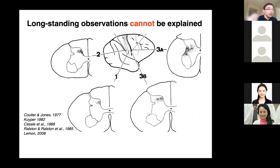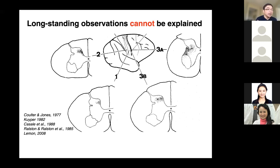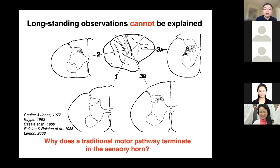For example, in a classic study by Coulter and Jones in the 1970s, they showed that injecting an anterograde tracer into the somatosensory cortex in monkeys revealed that their descending axons primarily innervate in the deep dorsal horn, especially those derived from area 3b, which represents touch in primates.